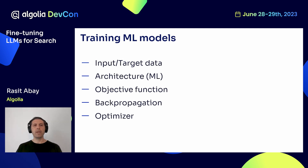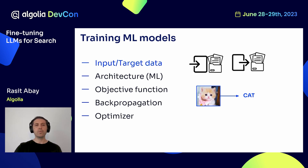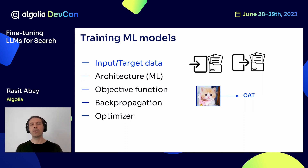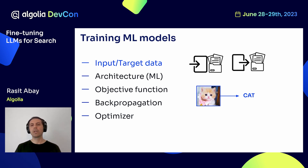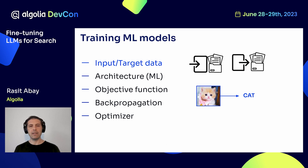When we train a machine learning model, we have five essential components. The first one is input and target data. Since what we talk here is supervised learning, we need to have a dataset as input and also labels. In our case, if this is an image — as you can see, it's a cat image — when we pass this through the neural network architecture, what we expect to have is 'cat', or whatever the numeric representation of the cat.